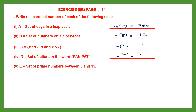Question E is the set of prime numbers between 5 and 15. Since it says between 5 and 15, we exclude 5 itself. The prime numbers are 7, 11, and 13. Then 17 is beyond 15 so we exclude it. So the cardinal number of set E is 3.